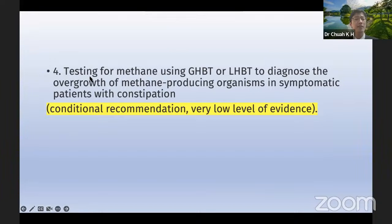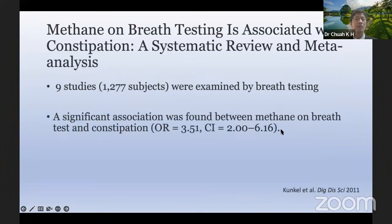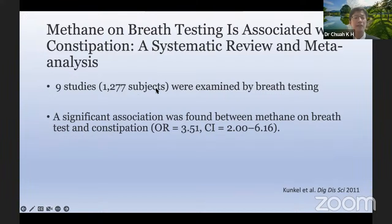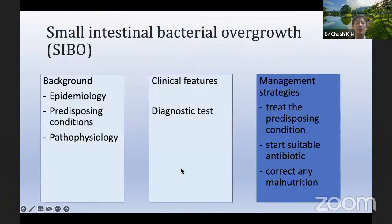The fourth ACG recommendation is to test for methane using GHBT or LHBT to diagnose overgrowth of methane-producing organisms in symptomatic patients with constipation — though the level of evidence is still very low. In a systematic review and meta-analysis published in 2011 examining nine studies with 1,277 subjects, a significant association was found between methane on breath test and constipation, with an odds ratio of 3.51. Certain patients with constipation — particularly slow transit constipation — may be associated with methane-positive SIBO.